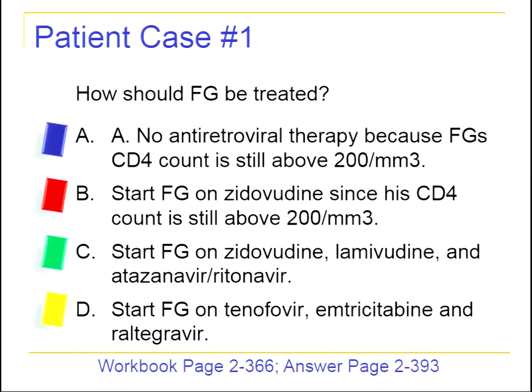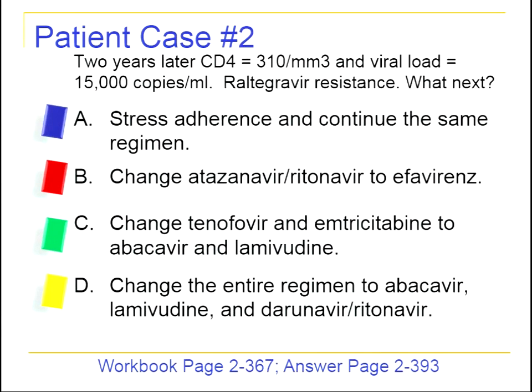FG should be treated with raltegravir, tenofovir, and emtricitabine — answer D. Case two: two years later, his CD4 count is now 310 and viral load is 15,000 copies per ml. Resistance testing detects resistance to raltegravir. What should happen next? Options include continuing the same regimen while stressing adherence, changing raltegravir to efavirenz, changing the NRTIs, or changing the entire regimen to abacavir, lamivudine, and darunavir boosted with ritonavir.